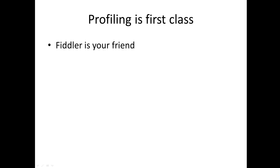I touched briefly on profiling. Profiling is first class — Oren Eini built NH Profiler for NHibernate; he knows what he's doing. Fiddler is your friend. You just see HTTP requests against your database — double click on them, you'll see the exact URL or your POST will be there. You'll see exactly what's hitting the database. You cannot achieve the level of profiling awesomeness with a relational database — unless you're really good with Wireshark.